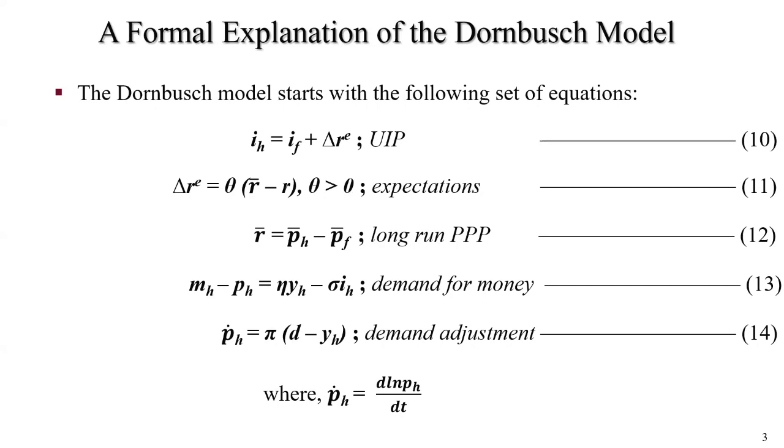Equation 13, this equation is the log-linear formulation of the demand for money. MH minus PH equals eta YH minus sigma IH.